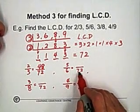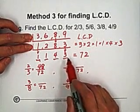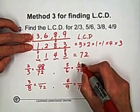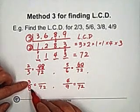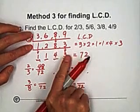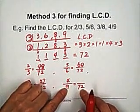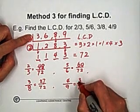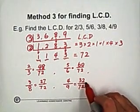For 3 eighths: 8 times 9 equals 72. Cover the numbers representing 8 (the 2 and 4), and you're left with 3 and 3, giving 9. So 9 times 8 equals 72, meaning multiply the top 3 by 9 to get 27 over 72. For 4 ninths: 9 times 8 equals 72. Cover 9; the remaining numbers give 8. So 4 times 8 equals 32 over 72. The equivalent fractions are 48/72, 60/72, 27/72, and 32/72.